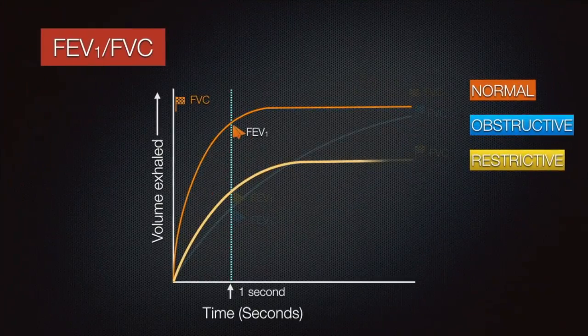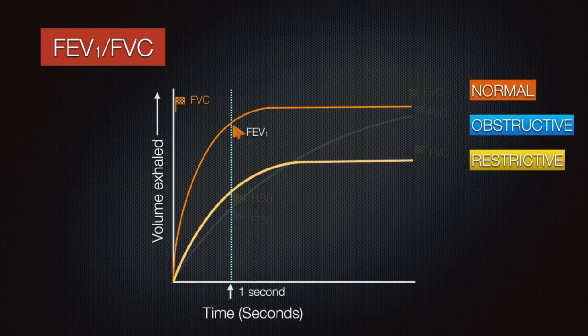When it comes to restrictive lung disease, the basic issue is a shrunken lung. No outflow limitation and the shape of the curve looks similar to a normal one. But the volume exhaled FVC is low, and though FEV1 is low, it maintains the proportion with respect to FVC.